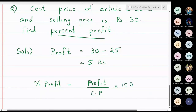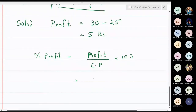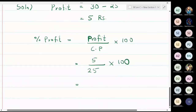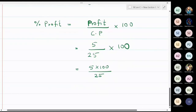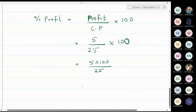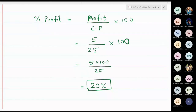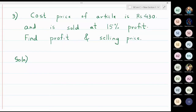Percentage profit equals profit divided by cost price, multiplied by 100. We divide by cost price, not selling price, because cost price is what's important. So percentage profit equals 5 divided by 25, multiplied by 100, which gives 500 divided by 25, equal to 20. The percentage profit is 20 percent.